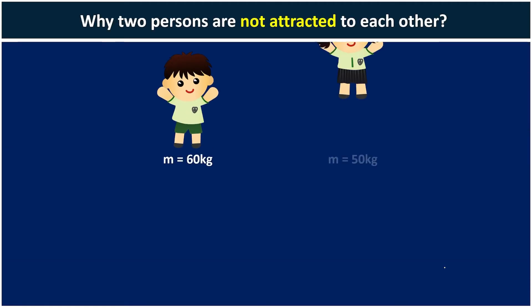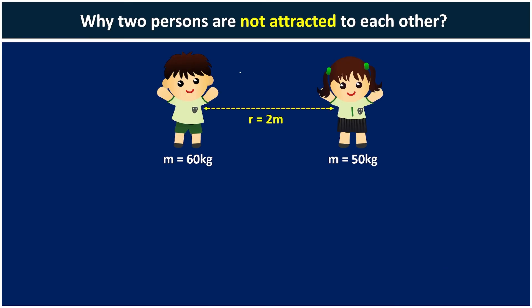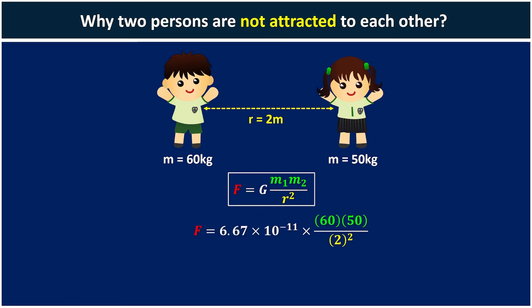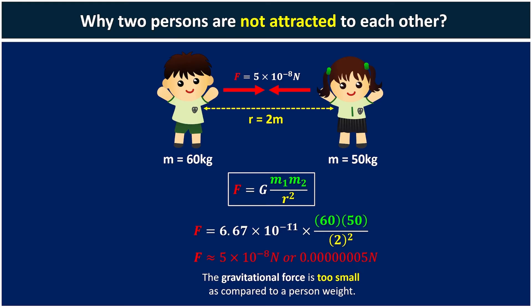Now we want to explain why two persons standing close to each other are not attracted to each other at all. There must be a gravitational force between them. Using G as the gravitational constant, M1 as the mass of the boy, M2 as the mass of the girl, and the distance as 2 meters, you will get a force of approximately 5 times 10 to the power of negative 8 Newtons. This force is so tiny that you will feel nothing, but it still exists.